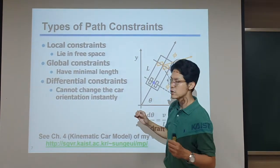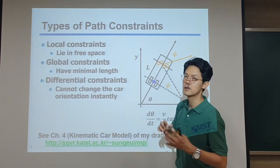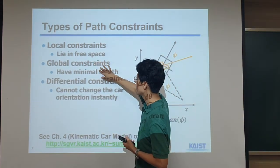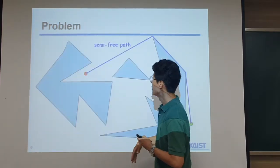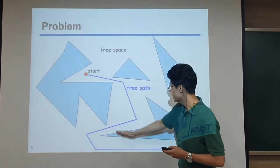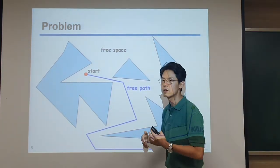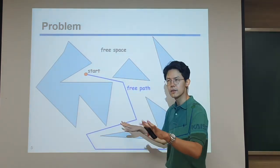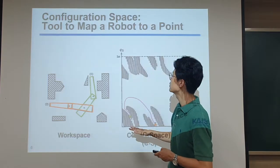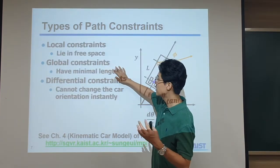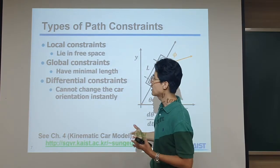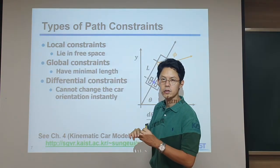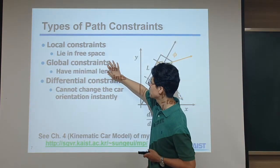There could also be global constraints, where we need to think about wider information. For example, there could be many different paths, but sometimes we want to go with the minimum travel distance — the shortest path. To do that we need to compare path lengths and look at the global structure of the possible path space. That's what we typically call a global constraint.